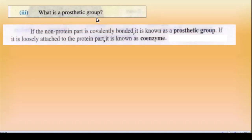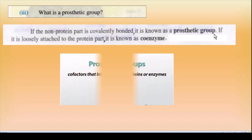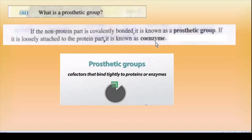Short Q3 — What is a prosthetic group? Agar ek non-protein part covalently bonded hota hai enzyme ke saath, toh use prosthetic group kehte hain. Agar yahi loosely attached hoga toh use coenzyme kehenge. Prosthetic group tightly bound hota hai enzyme ke saath aur yeh cofactor ki ek type hai.